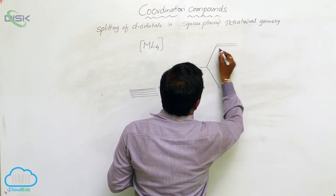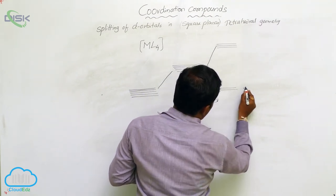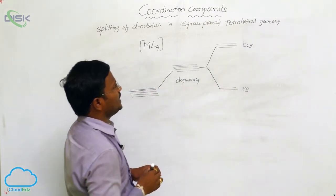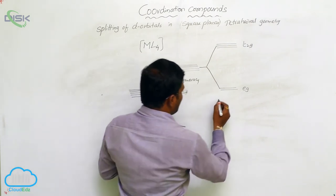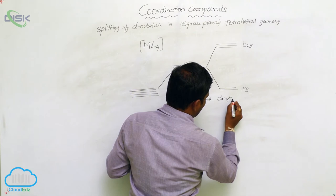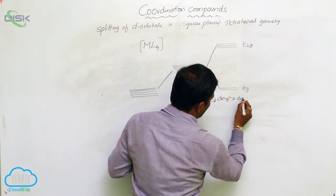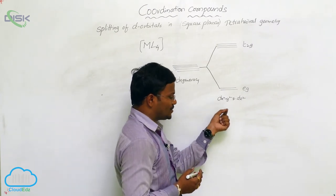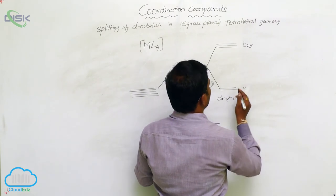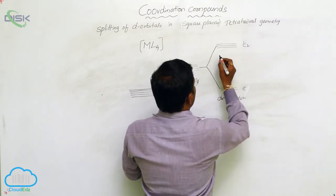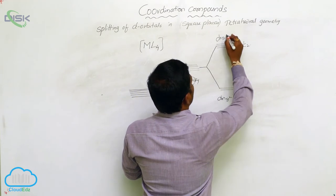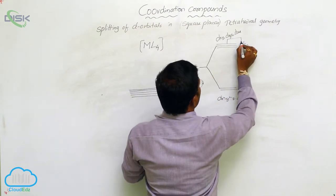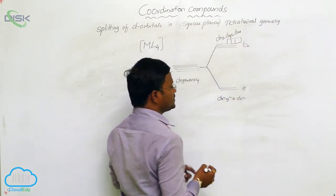But when they go on to interact, in tetrahedral geometry specifically, the dx²-y² and dz² orbitals experience less repulsion with ligands and hence enter into the less energetic E level. Due to more repulsion, the dxy, dyz, and dzx orbitals enter into the high energetic T2 level.